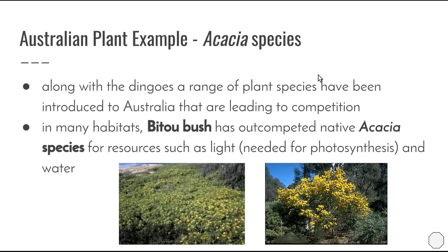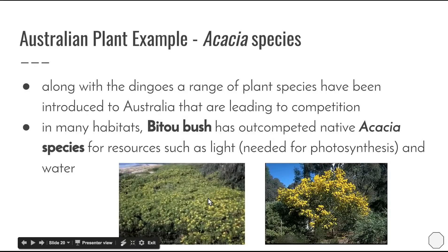An Australian plant example is the acacia species. Along with a wide range of animal species, a number of plant species have been introduced to Australia which have impacted on native species, leading to competition for resources such as light for photosynthesis and water. In many habitats around Australia, the bitcher bush has started to outcompete the acacia species, leading to their decline in population numbers. As we can see in the picture, the bitcher bush forms a weed mat that takes up space and area, impacting the native acacia species' ability to extract water.